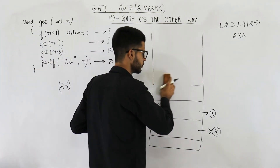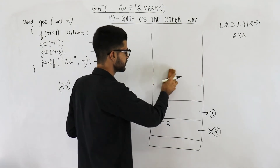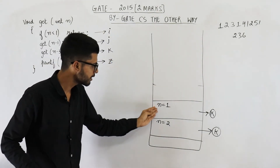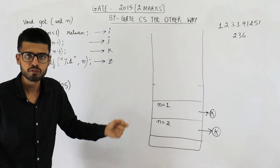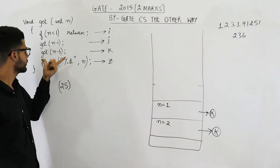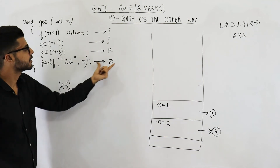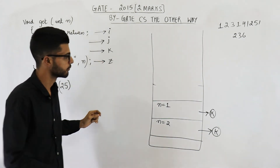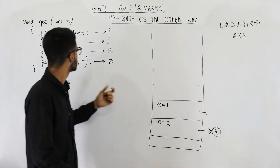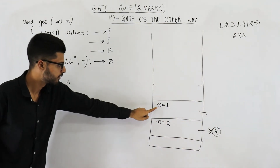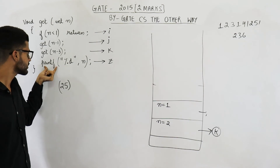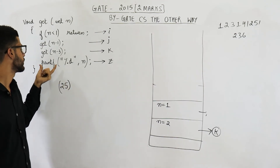So get(minus 2) also returns and hence its activation record will be popped from the stack. You will come back to get(1). Currently we executed line k, so now you will continue from line z. So we need to continue from line z — meaning the print statement is executed for the first time.